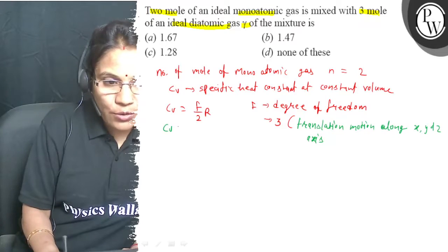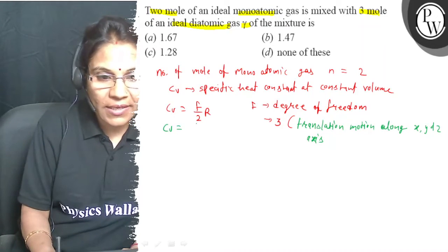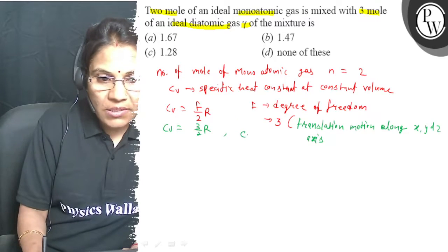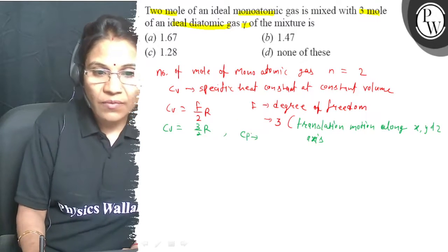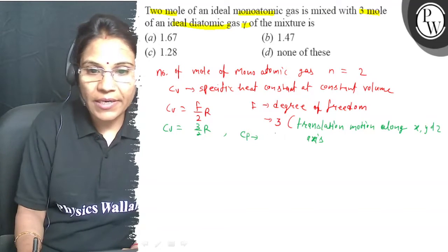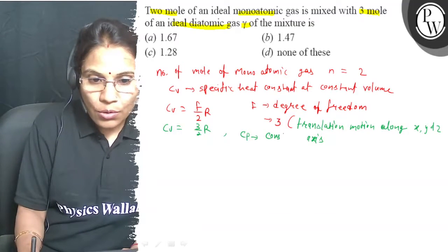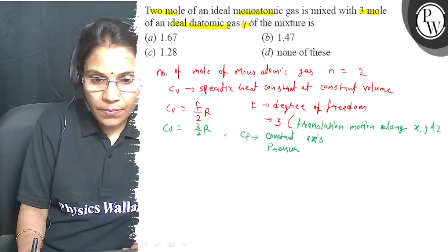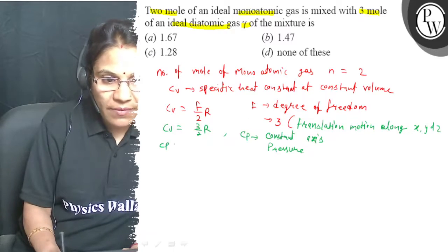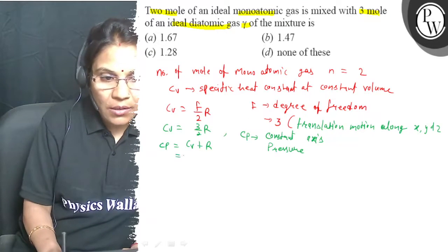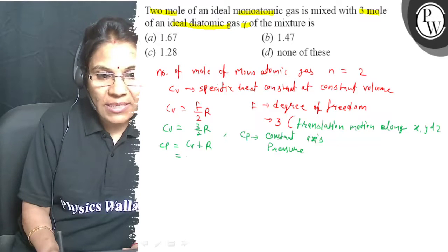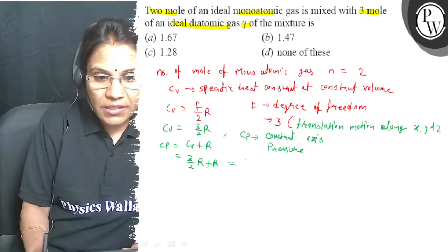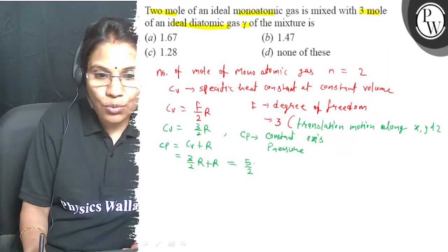So, cv value of monoatomic gas is 3/2 R and cp value which is the specific heat constant at constant pressure. And this cp value is equal to cv value plus R. So, for monoatomic gas this cp value is 3/2 R plus R equals 5/2 R.